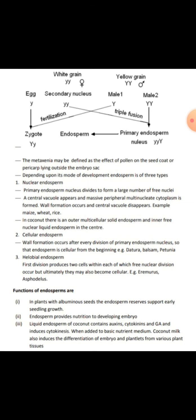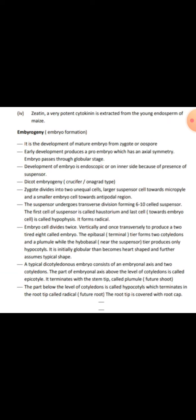In plants with albuminous seeds, the endosperm reserves support early seedling growth and provide nutrition for development of the embryo. Zeatin, a very potent cytokinin, is extracted from the young endosperm of maize.